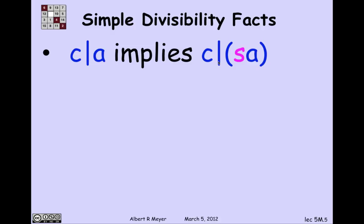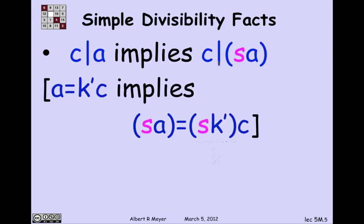Another trivial fact that follows from the definition is that if C divides A, then C divides any constant times A. Let's just check that out. If I'm given that C divides A, that means that A equals K prime C for some K prime. That implies that if I multiply both sides of this equality by S, I get that SA equals SK prime C. And if I parenthesize the SK prime, I can call that to be K. And I've found, sure enough, that SA is a multiple of C.